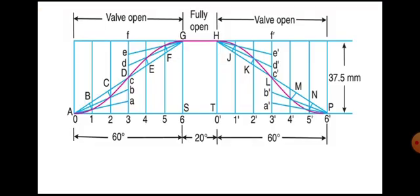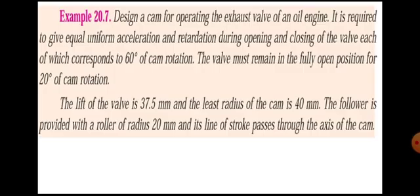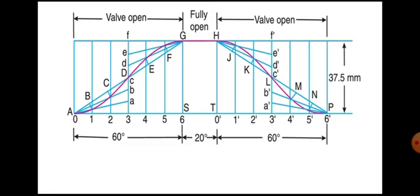First we will go to the displacement diagram. Displacement diagram for uniformly accelerated and retarded motion. This is the method. First, drop a horizontal line. The question gives us 60, 20, and 60 degrees — so mark 60 degrees for the first opening on the horizontal line.